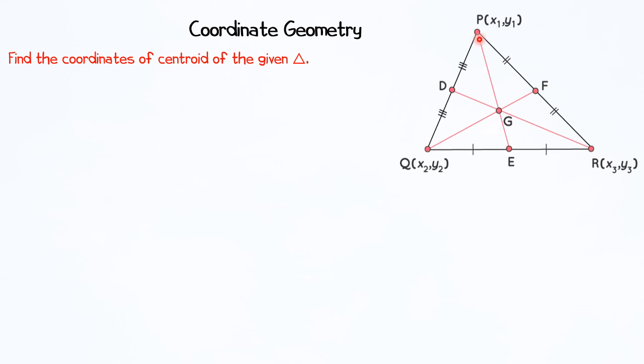The median of a triangle is a line joining a vertex to the midpoint of the opposite side. For example, if you join vertex Q to the midpoint of the opposite side, this line is called a median.